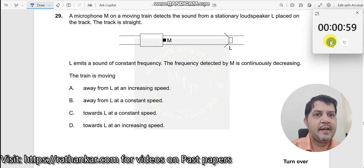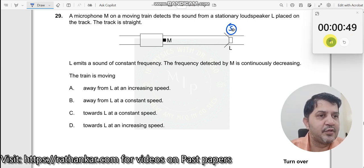Question number 29. A microphone M is moving on a moving train that detects the sound from a stationary loudspeaker. So this is your loudspeaker which is giving out the sound, which means this is my source placed on the track. The track is straight.